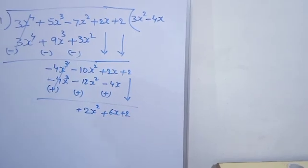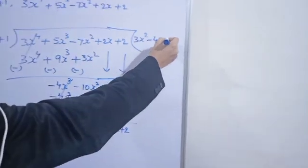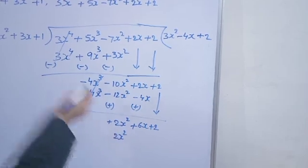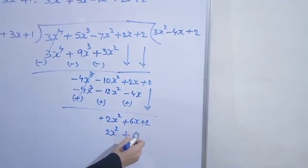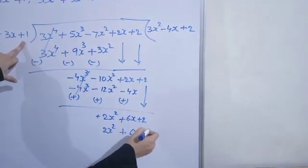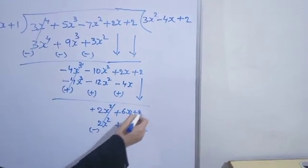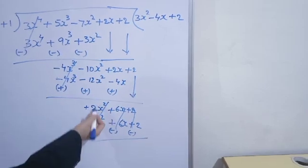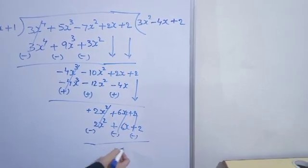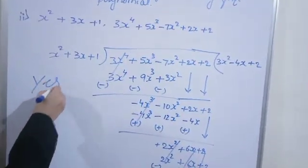Ab x² hai, 2x² chahiye to 2 le lenge. Plus 2 into x² = 2x². Plus into plus = 3 into 2 = 6 into x = 6x. Plus 2 into 1 = 2. Sign change karenge. Cancel ho jayega: plus 2 minus 2, plus 6x minus 6x, plus 2x² minus 2x² is 0. Yah wala bhi hume remainder 0 aaya hai, to it is a factor. Yes, it is a factor.